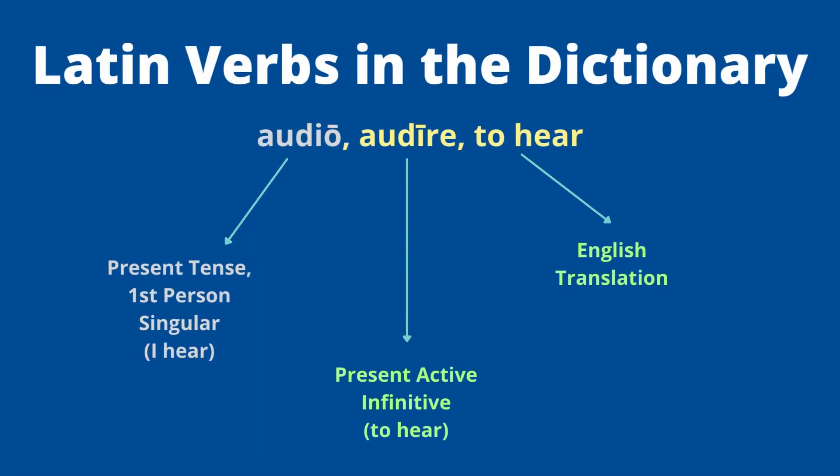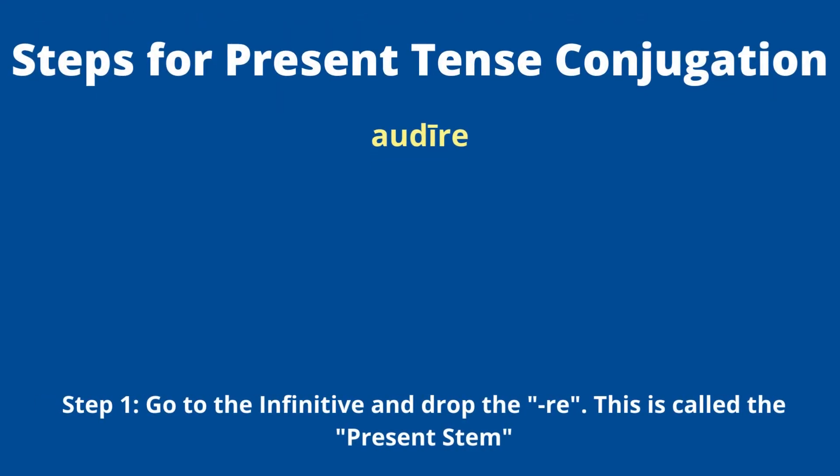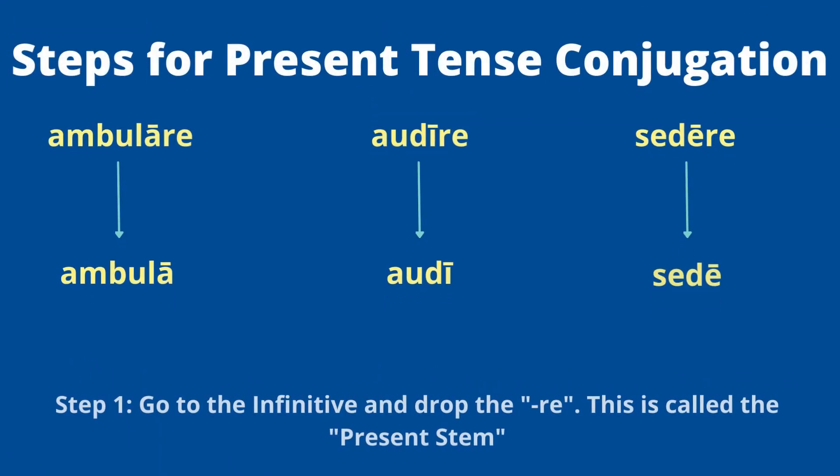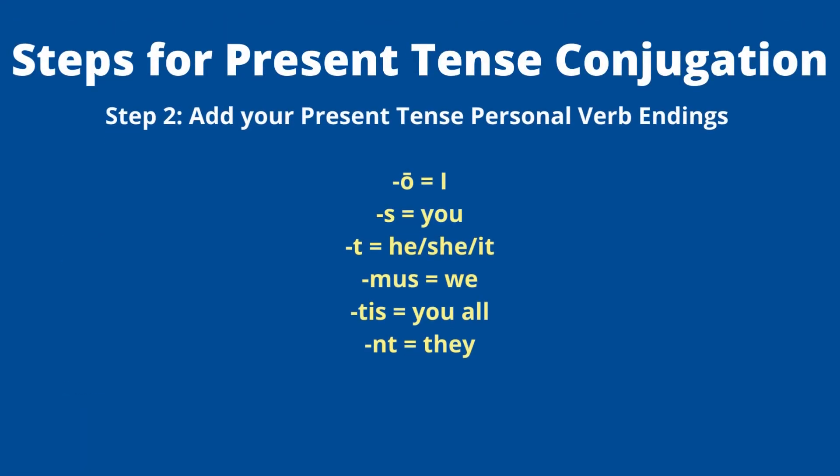For the rest of the forms, we go to the second piece — the infinitive 'audire,' meaning 'to hear.' This is the starting point when dealing with the present tense. Here's step one: go to the infinitive and drop the '-re.' This gives us what we call the present stem. For example, 'ambulare' gives a stem of 'ambula'; 'audire' gives 'audi'; and 'sedere' gives 'sede.'